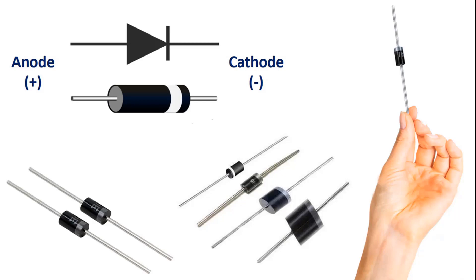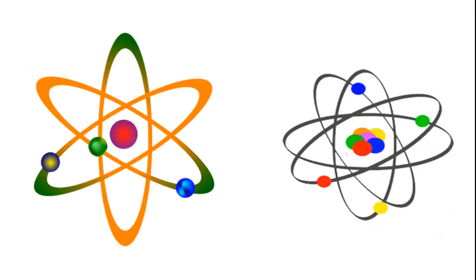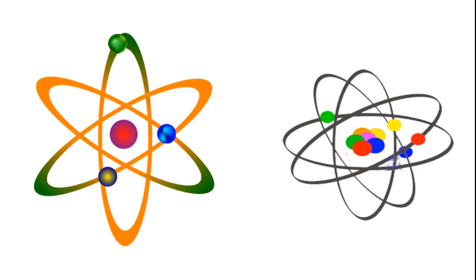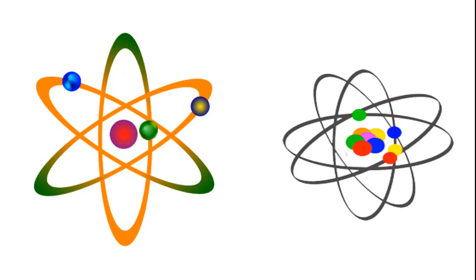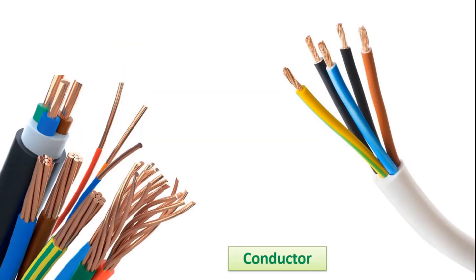Before the structure of the diode, let's look at the electron configuration of the atoms. Atoms with 1, 2, or 3 electrons in their last orbital are conductive, and those with 4 electrons are semiconductor. Semiconductors are insulators under normal circumstances, but they can be made conductive by adding additives. Diodes are formed by doping of these semiconductors.